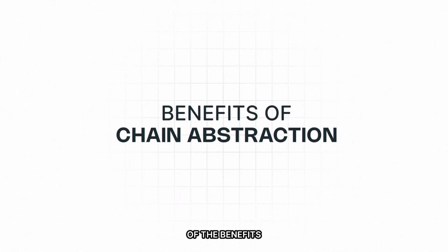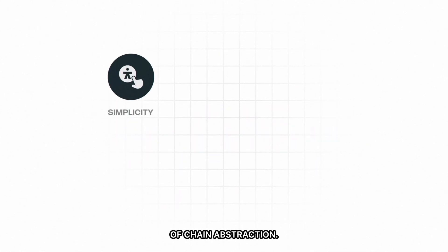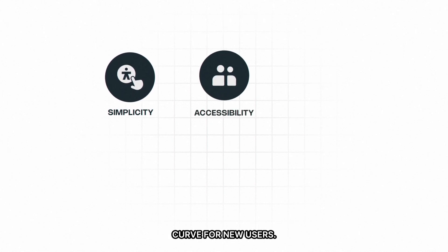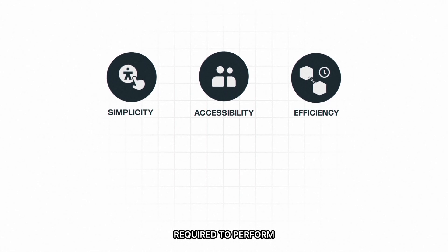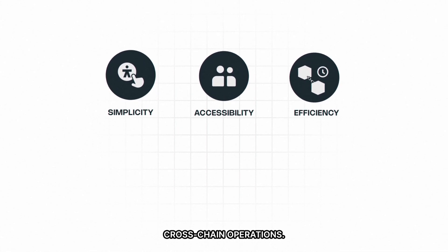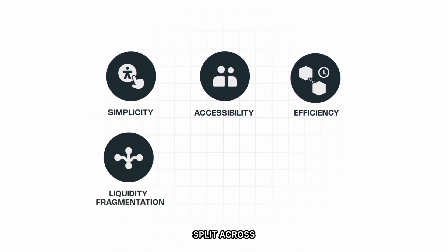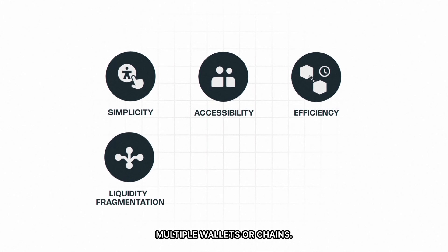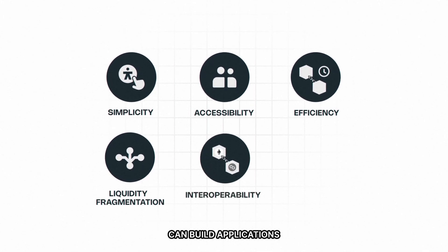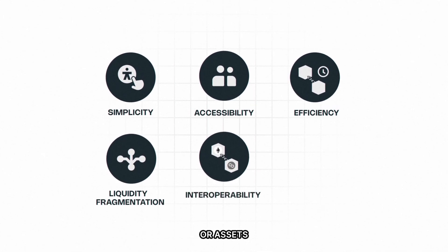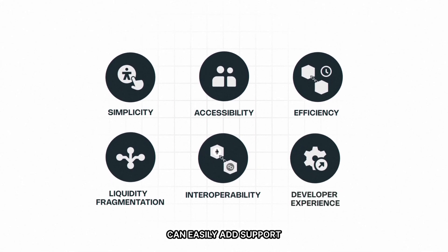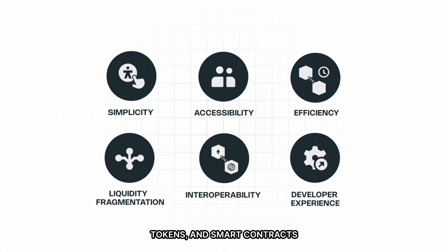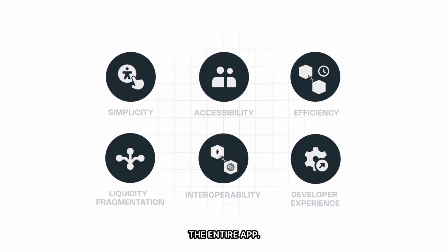Here are a few of the benefits of Chain Abstraction. It makes the blockchain experience straightforward and user-friendly. It reduces the learning curve for new users. It reduces the time and effort required to perform cross-chain operations. Users' funds are no longer split across multiple wallets or chains. Developers can build applications that are not limited to the capabilities or assets of a single blockchain. Developers can easily add support for new chains, tokens, and smart contracts without changing the entire app.